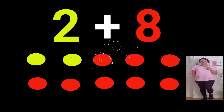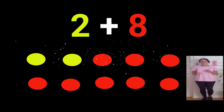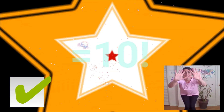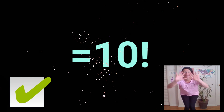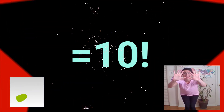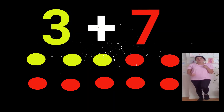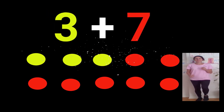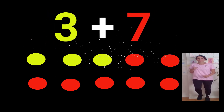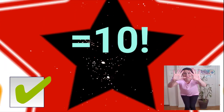Two plus eight equals ten. Two plus seven equals ten.